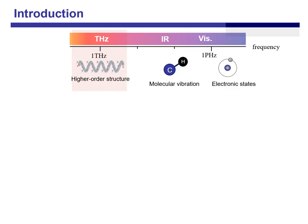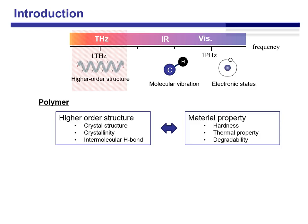As you may know, the terahertz spectra shows the vibration of large mass moving slowly. Polymer is one of the good targets for terahertz spectroscopy because we can see the higher-order structure directly, such as crystal structure, crystallinity, or intermolecular hydrogen bond. This structure is related to the material property of polymers, such as hardness, thermal property, or degradability.